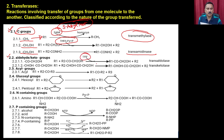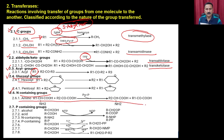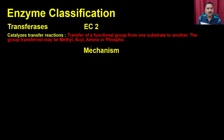For methyl transferases, S-adenosylmethionine is used as the cofactor. Hydroxymethyl transferases sometimes use pyridoxyl phosphate or tetrahydrofolate. EC2.2 includes transaldolases and transketolases; EC2.3 are acyl transferases; EC2.4 includes hexosyl transferases; EC2.6 transfers nitrogen-containing groups; EC2.7 transfers phosphorus-containing groups.